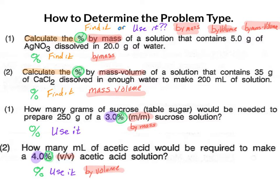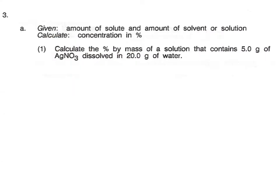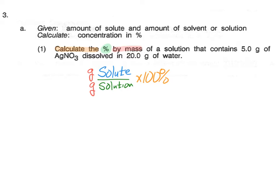Once we have all that information, we can set up the question. For our percent calculations, we're always going to have the solute on top and the solution on the bottom. For a find it problem, that means we're going to be multiplying by 100%. Since this problem is by mass, our units should be in grams — grams on top, grams on the bottom.